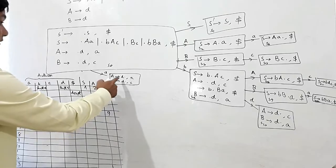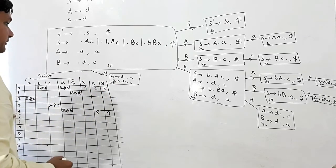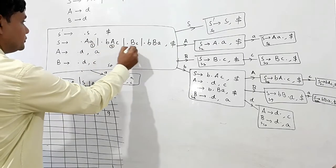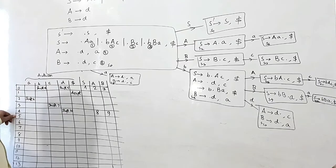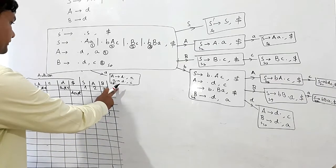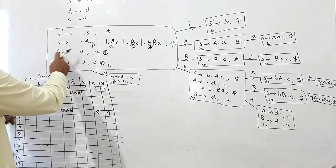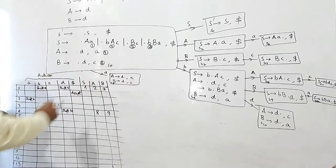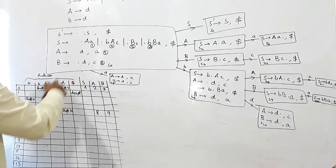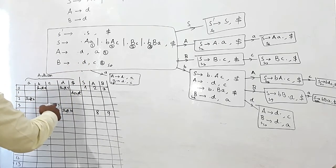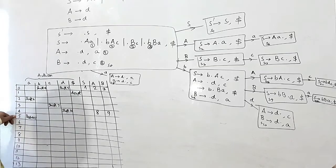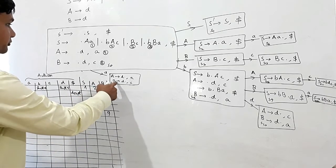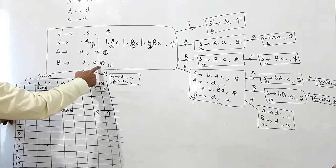In state 5, D can be reduced by A and D can be reduced by B. Listing production numbers 1 through 6: in state 5, D can be reduced by A — that is reduction 5 — at lookahead A. So I am writing reduce 5. In state 5, D can be reduced by B at lookahead C — that is reduction 6, reduce 6.